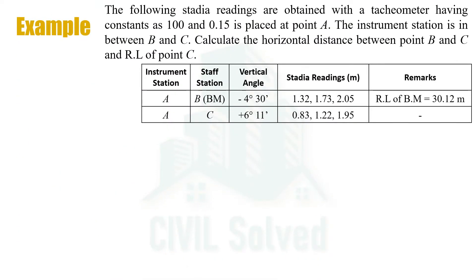Looking at this example, we are given three different points. At one point the instrument is being placed, and at two other points the staff readings are being taken. The tachymetric constants are also given, and we are asked to calculate the horizontal distance between point B and point C, and also the reduced level of point C.